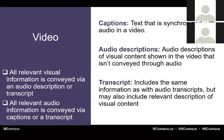If your resource includes video, all relevant visual information needs to be conveyed in an audio description or transcript, and all relevant audio information is conveyed via captions or a transcript. Captions are text that is synchronized with the audio in a video. Audio descriptions are for someone who can't see the video and needs descriptions of visual content not otherwise being conveyed through the audio. A transcript would include the same information as an audio transcript, but may also include relevant descriptions of visual content.